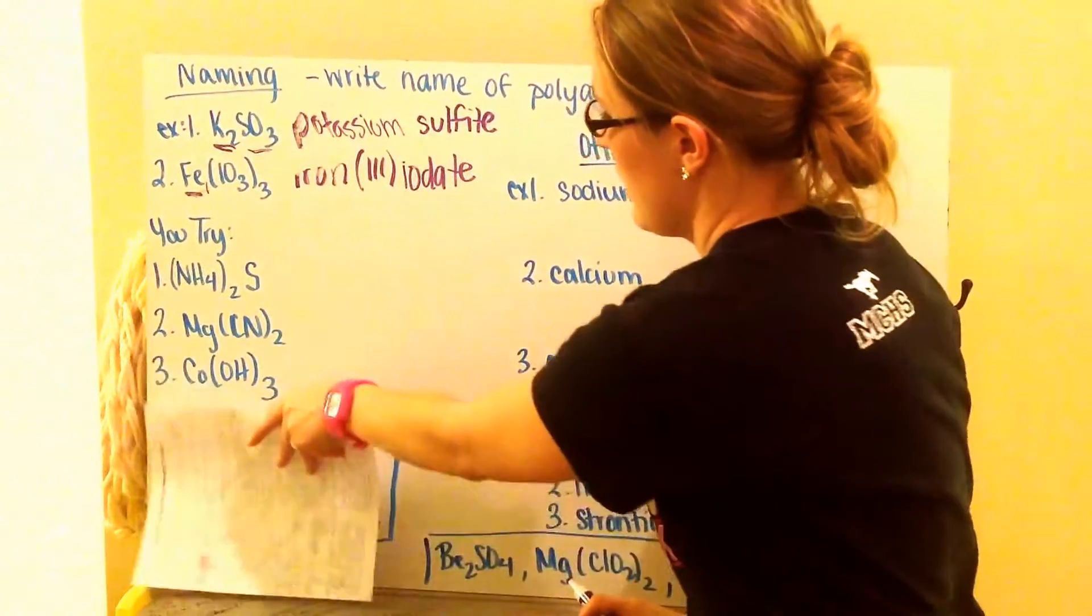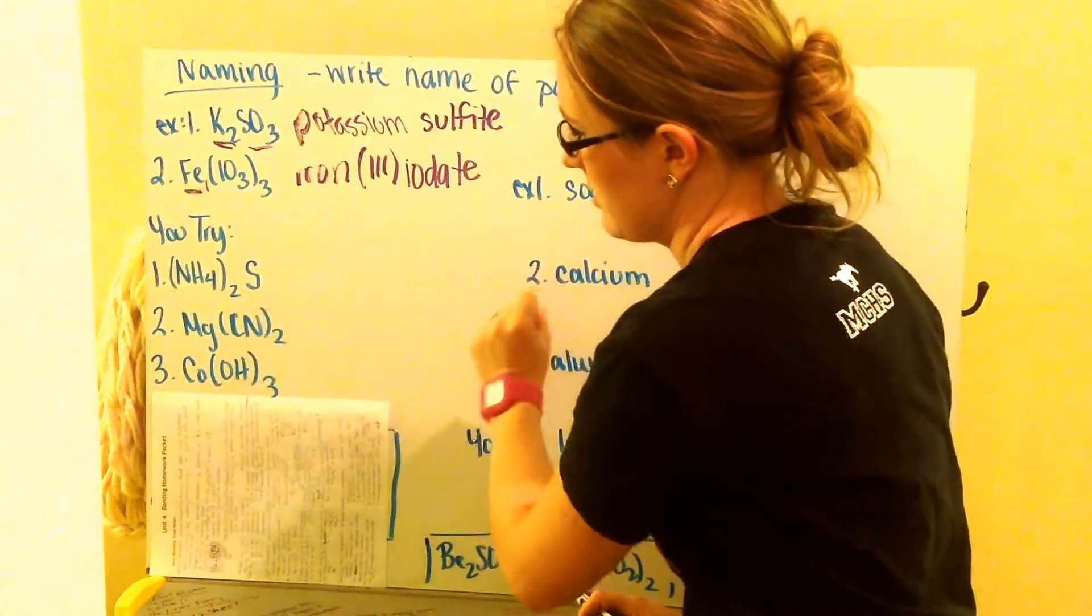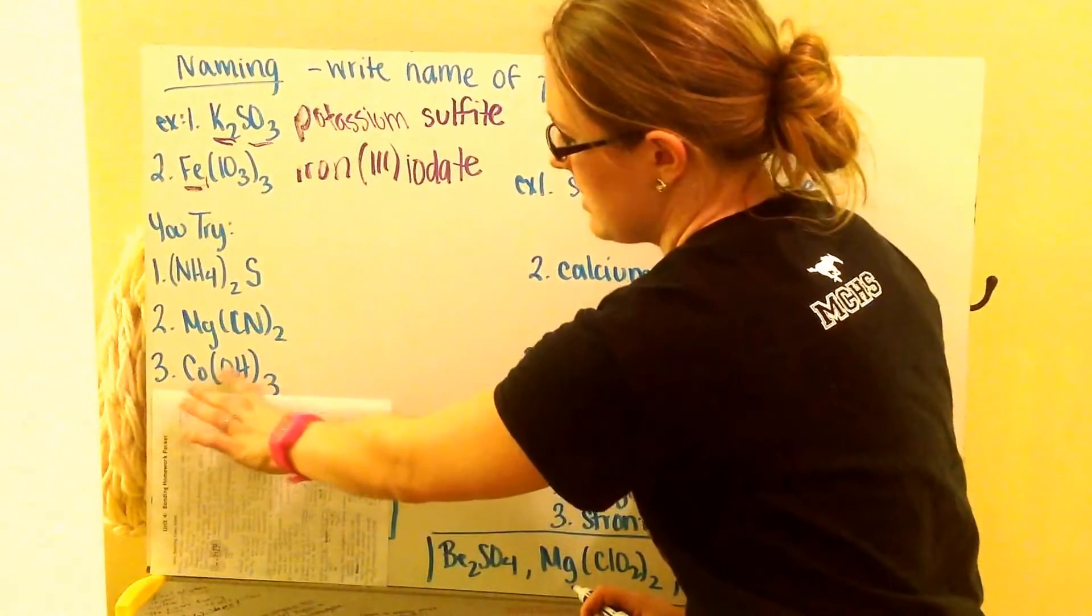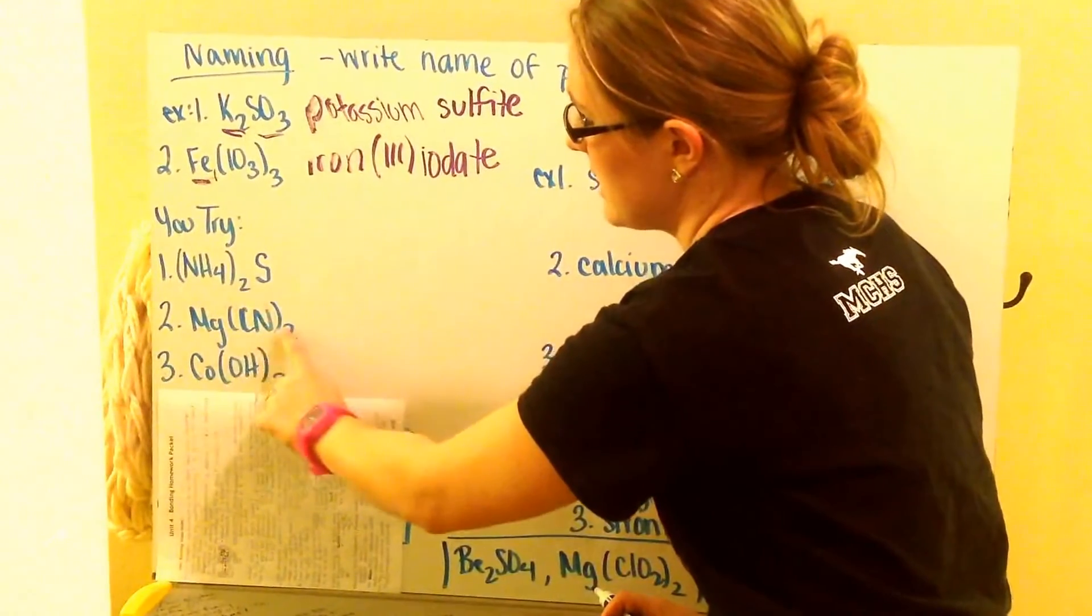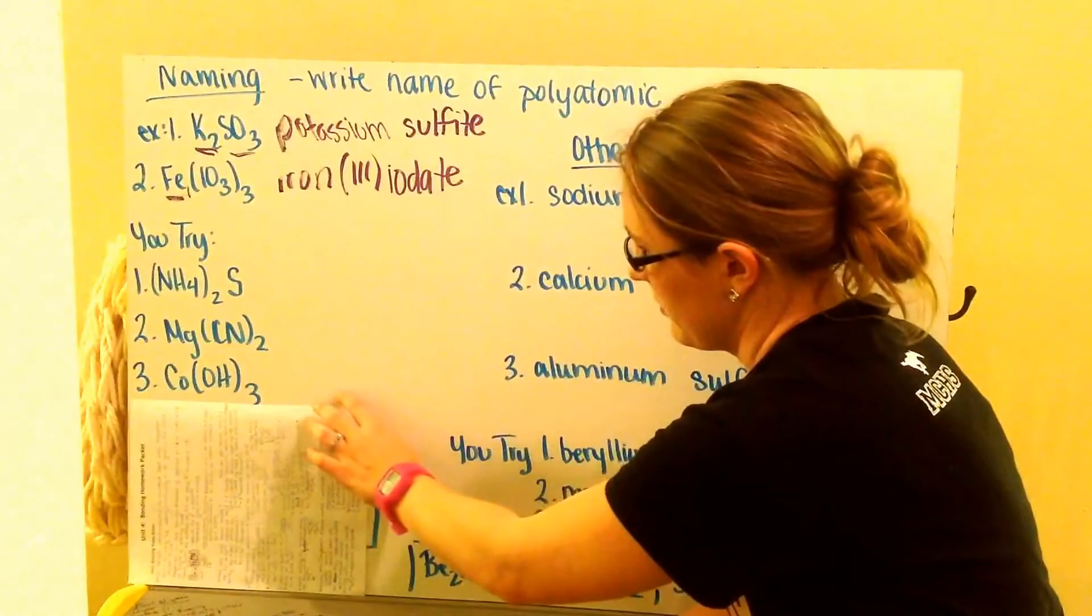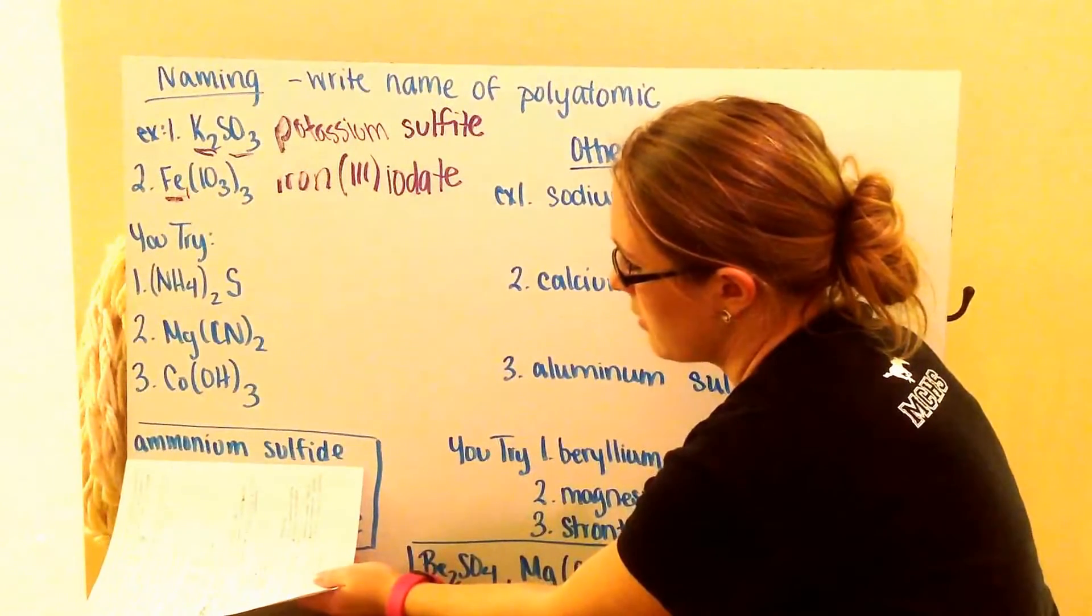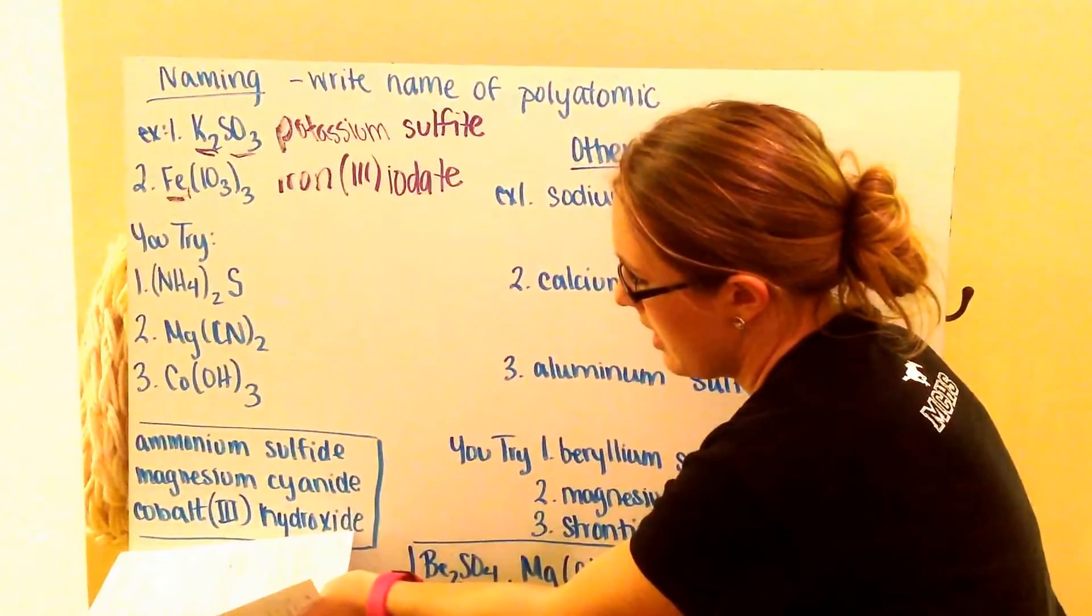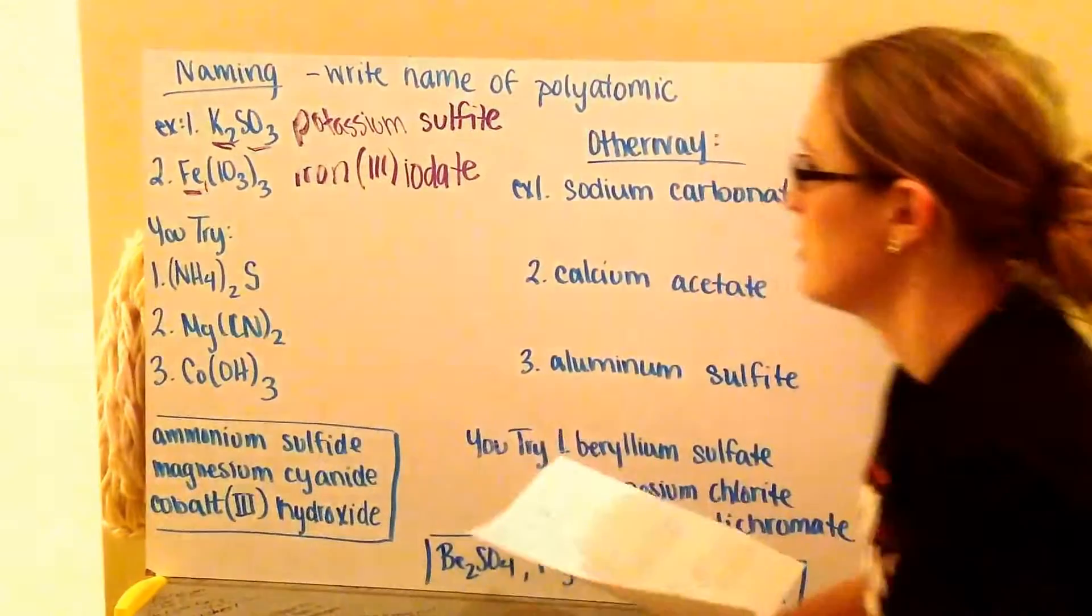Go ahead now, and try the following. (NH4)2S, name that one. Then name Mg(CN)2, and Co(OH)3. Again, notice that there's parentheses around my polyatomic ions. You should have got ammonium sulfide, magnesium cyanide, and cobalt (II) hydroxide. OH is hydroxide.